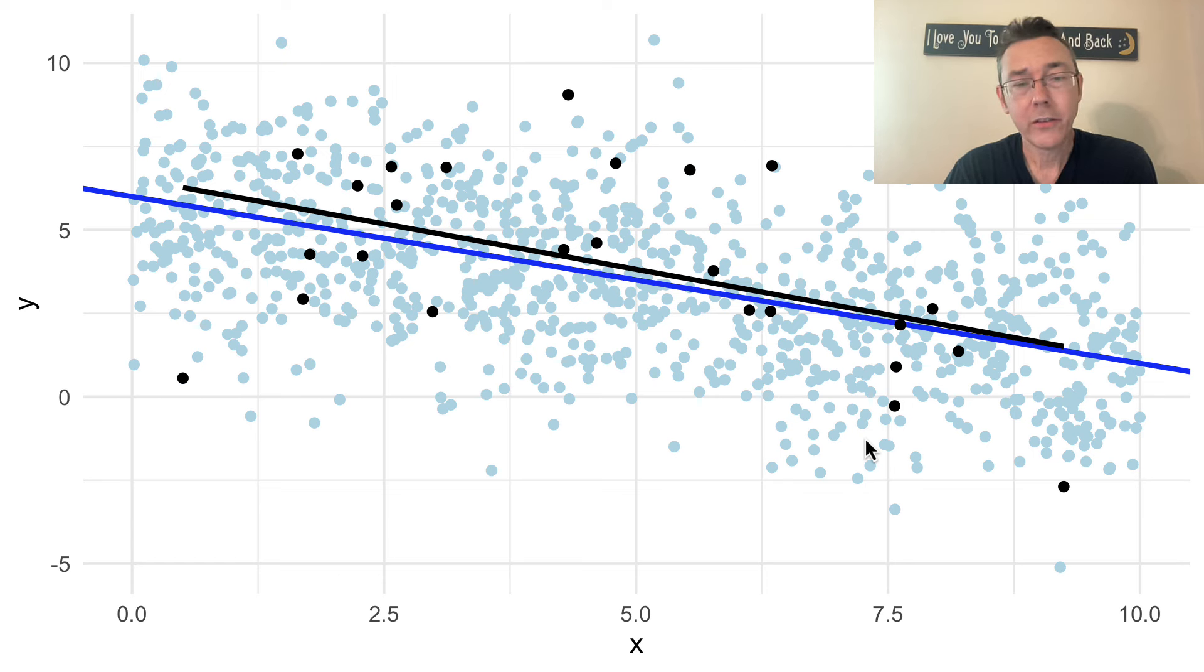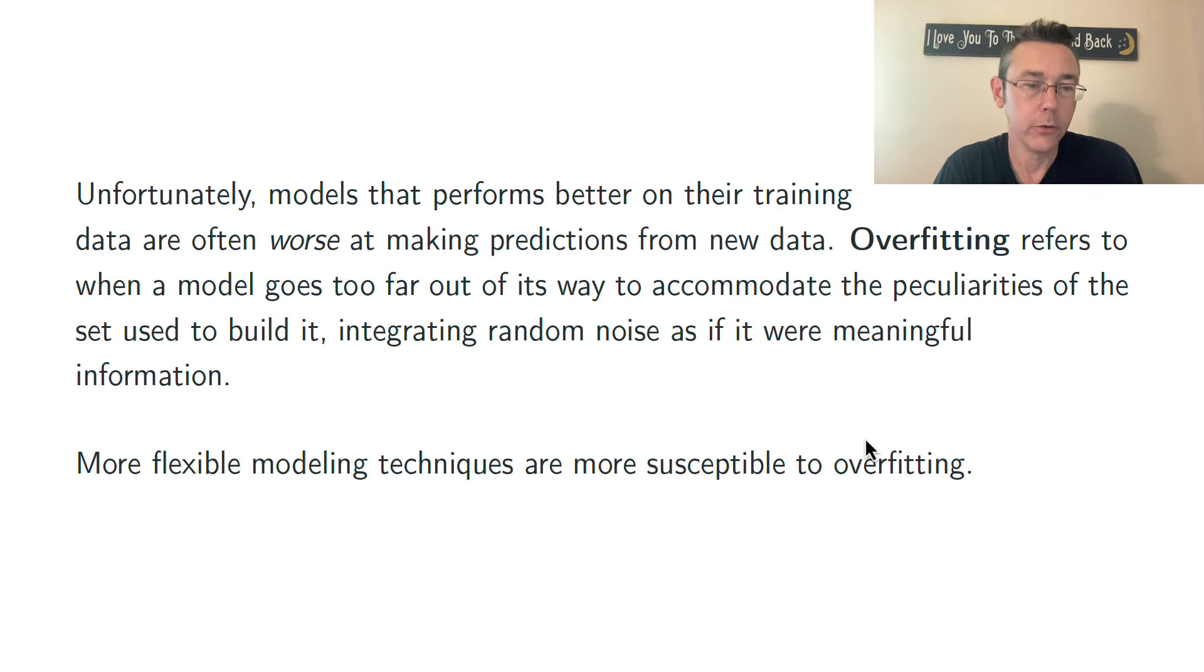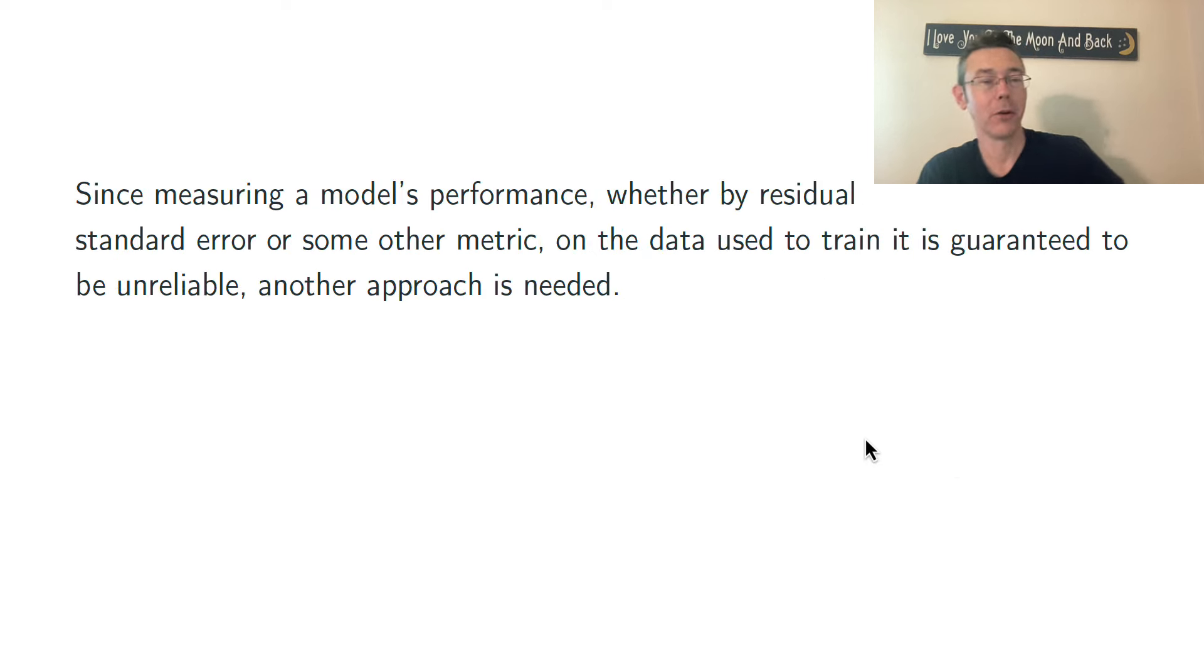Okay, so I said that here we have this unrealistic assumption of omniscience on our population data, all these blue dots. In the real world, you don't have all those blue dots. All you have is your sample. All you have is some black dots. So just a couple words as we conclude about what to do in the real world. Since measuring a model's performance, regardless of what metric you're using, on the data that's used to train it is guaranteed to be unreliable, you need some other approach.